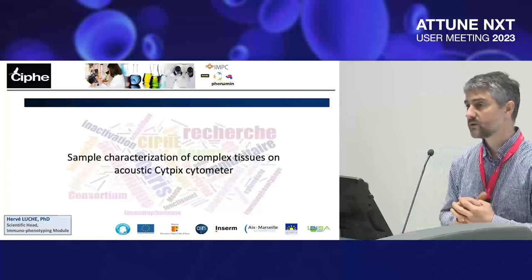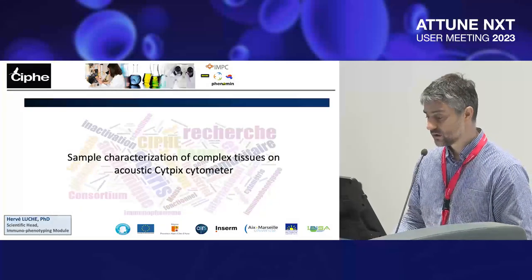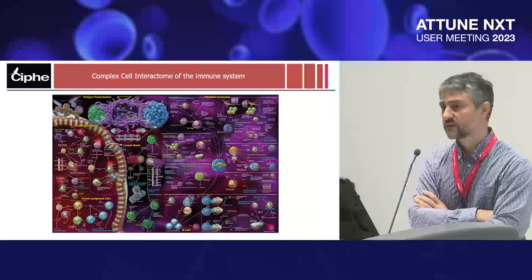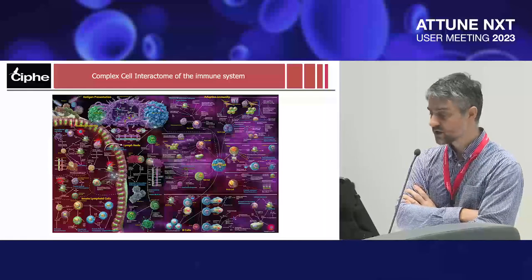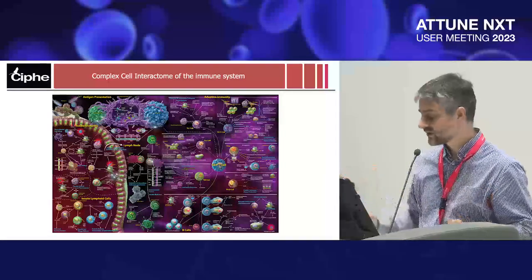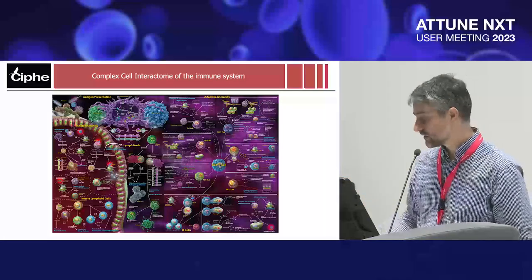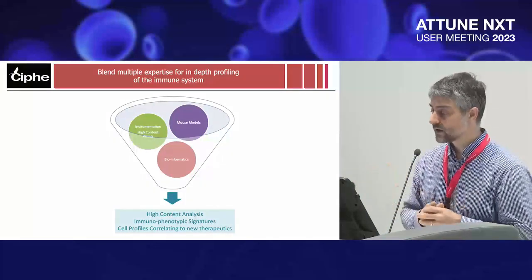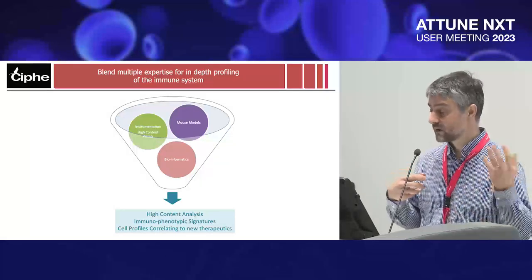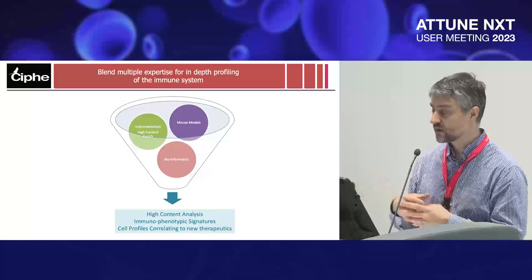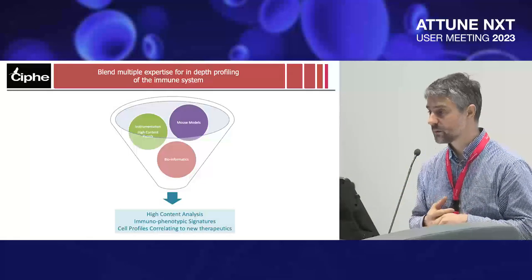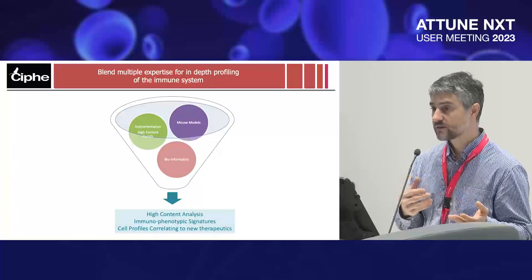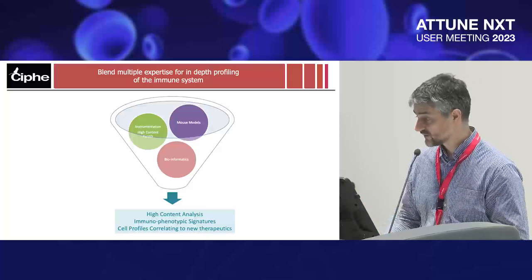Just to give you some context about what we do: the Center of Immunophenomics in Marseille is interested in studying the immune system and the immune reaction. It's very complicated — you have lots of interactors. That's why we use cytometry intensively in the lab, combining instrumentation, panels, bioinformatics, as well as mouse models. I work mostly in the preclinical space, and the idea is that we help our partners identify the cellular correlates to a candidate treatment.